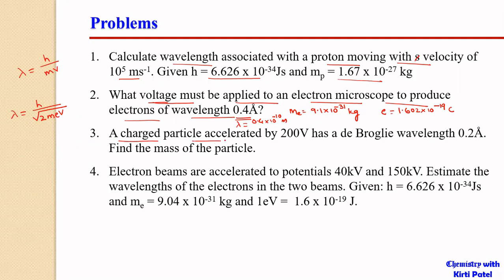Problem 3: A charged particle accelerated by 200 volts has a de Broglie wavelength of 0.2 Ångströms; find the mass of the particle. Using λ = h/√(2meV), with V = 200 V, e = 1.602 × 10⁻¹⁹ C (assuming one unit of charge), and λ = 0.2 Å = 0.2 × 10⁻¹⁰ m, the mass m can be easily calculated from this equation.